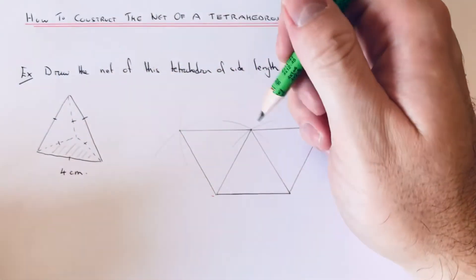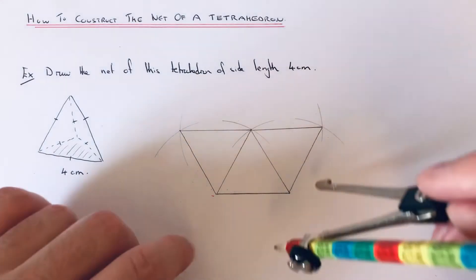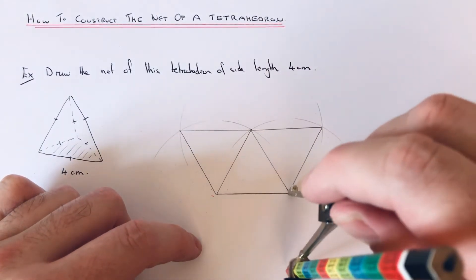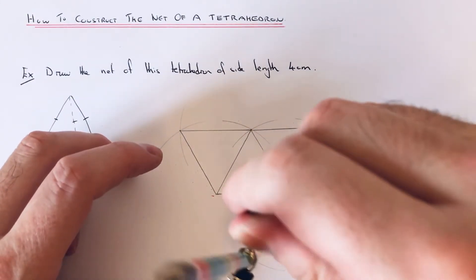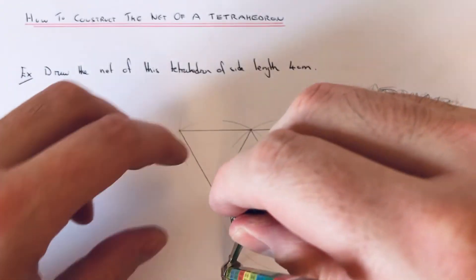So that is our second face, and then we just need to do one more face at the bottom. If there's an arc below and another arc.